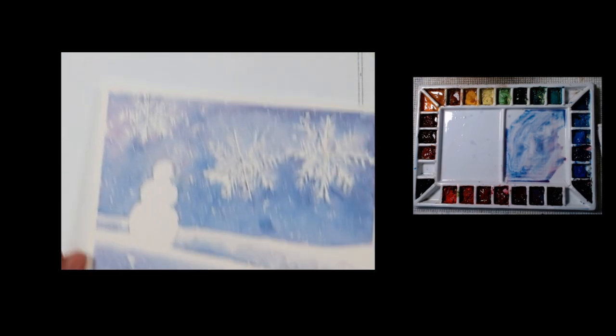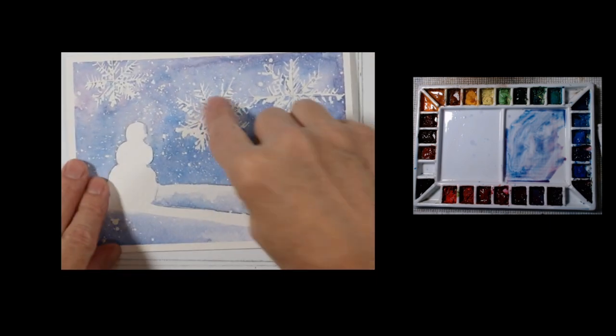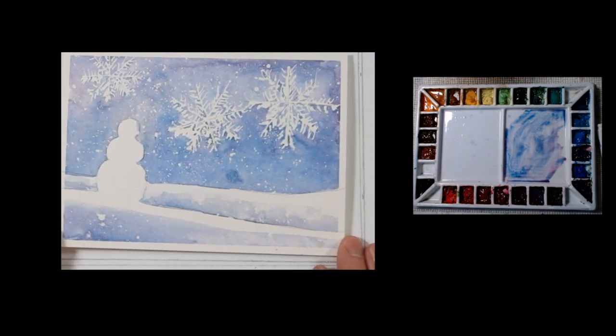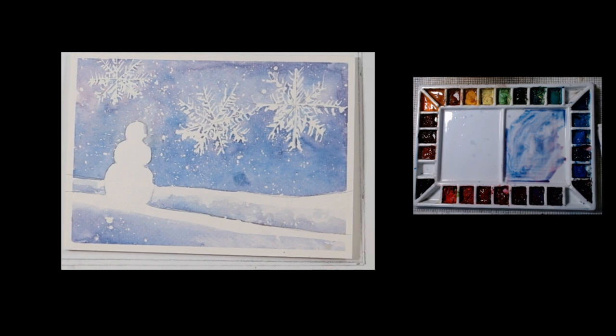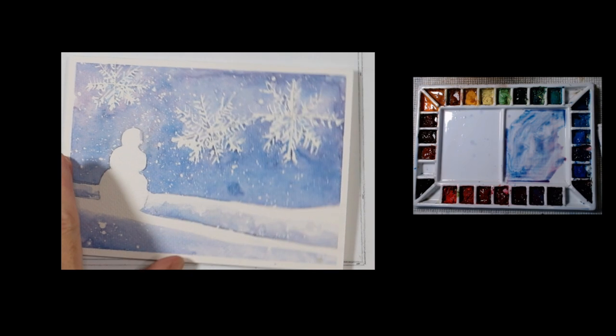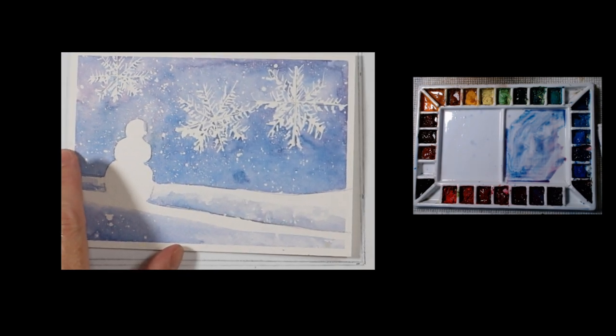And there we have a very simple card. A lot of it's done with just the initial masking of the snowflakes and the splatter. And then just painting around the shapes and these edges with just a wash. You can make this any color you want. And do a little experimentation. So, I hope you have fun painting this.